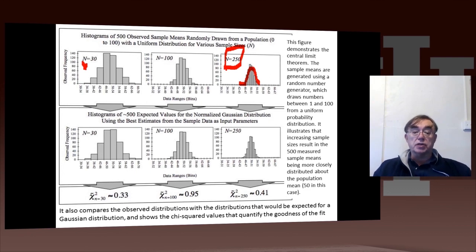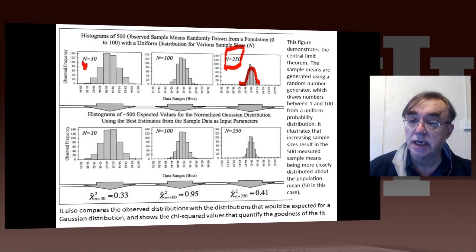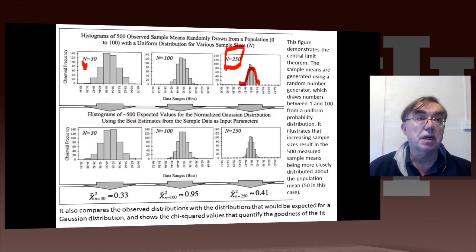And there's some measure of quality called chi-squared, which is good if it's less than one. And these all have good chi-squareds. So this says, again, when you do something many times and you add things up, you will get Gaussian distributions.